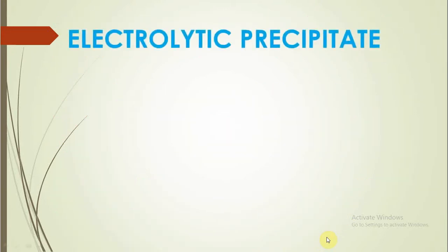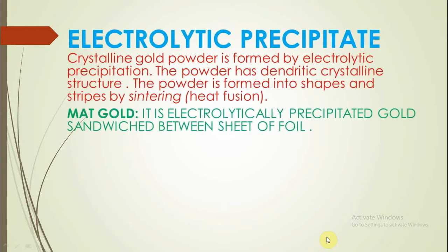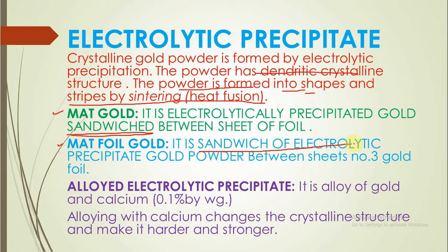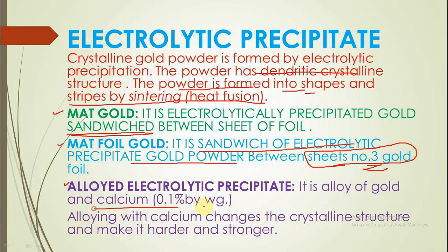The second type is electrolytic precipitate. By the process of electrolytic precipitation, crystalline gold powder with a dendritic crystalline structure is formed, and this powder is processed by heat fusion or sintering into different shapes. Matte gold has electrolytic precipitate sandwiched between two layers of foil. Matte foil gold has a sandwich of electrolytic precipitate powder between number sheets of gold foil — specifically number 3 gold foil. In alloyed electrolytic precipitate, calcium is added, which increases hardness and strength.